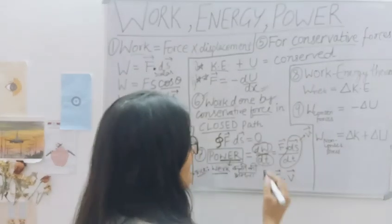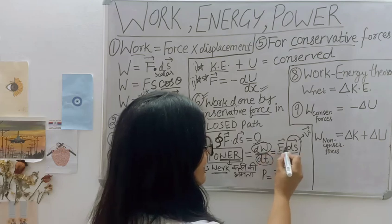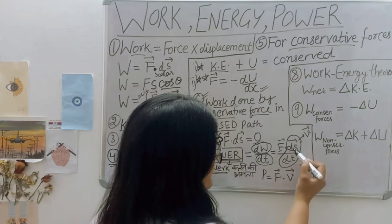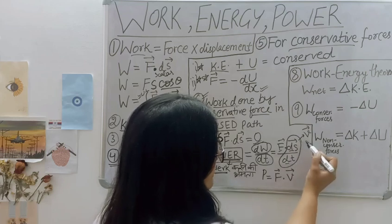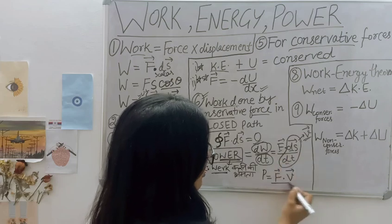If I replace this, we know that work done is force into displacement. Dt is as it is. Ds by dt, displacement per unit time, is our velocity. That's why we can write it as power equals F dot v.